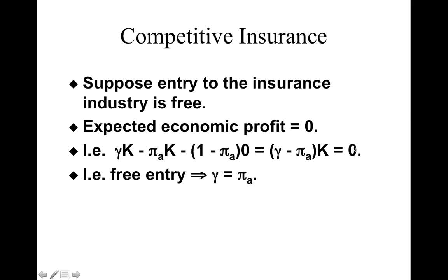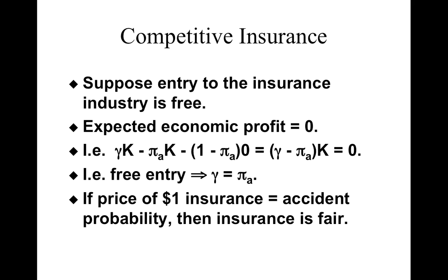Dividing both sides by k, we get that free entry implies the price of a dollar of insurance equals the probability that the accident will happen. So if the insurance industry is competitive, in equilibrium the price of a dollar of insurance is equated to the accident probability. We call this insurance 'fair.' If the price of a dollar of insurance equals the accident probability, the insurance is fair; if not, it is unfair.